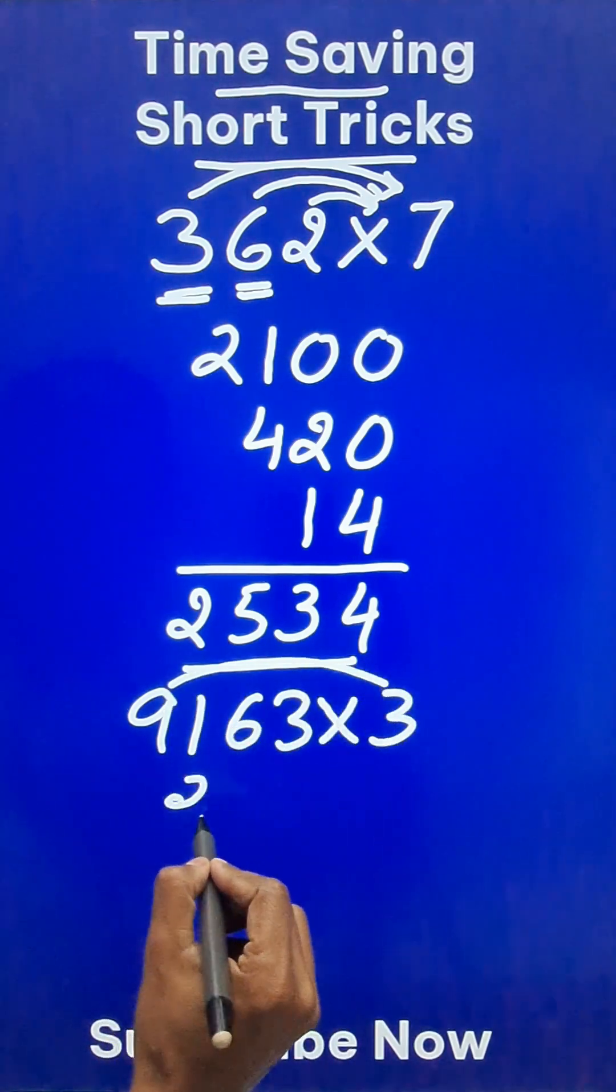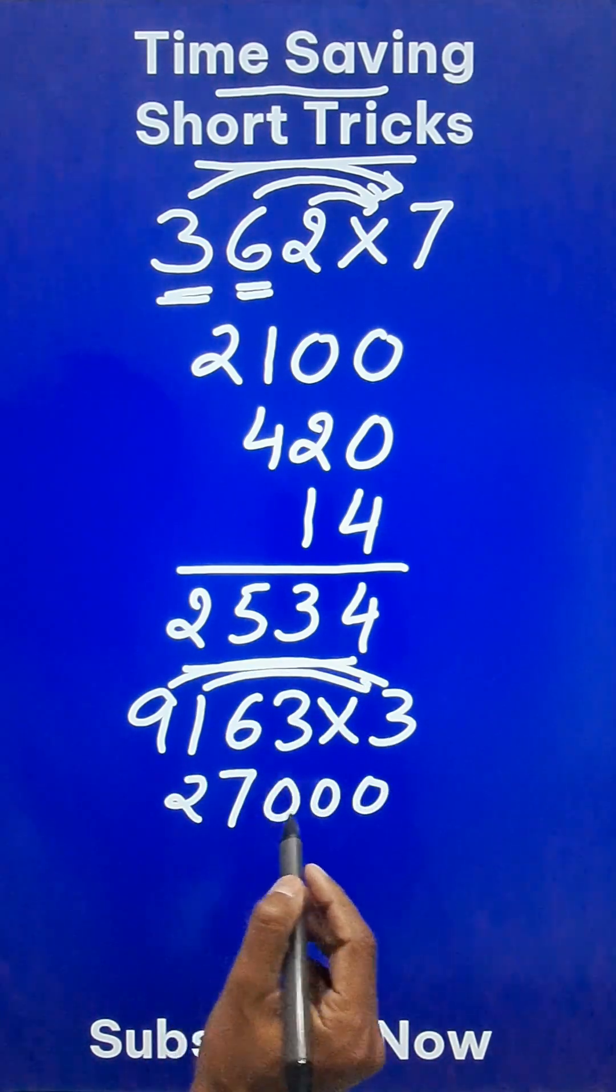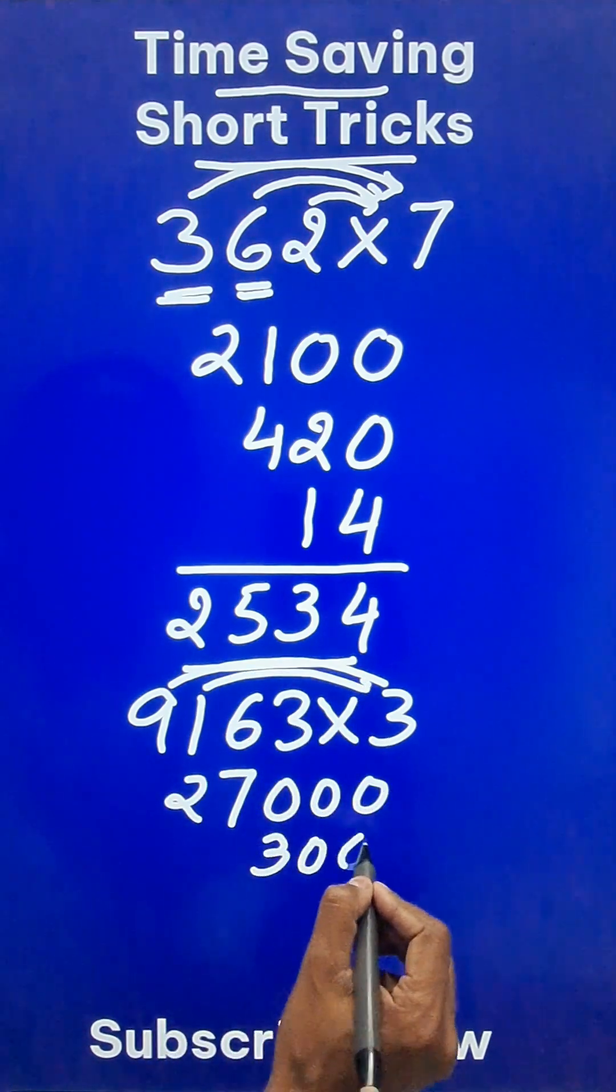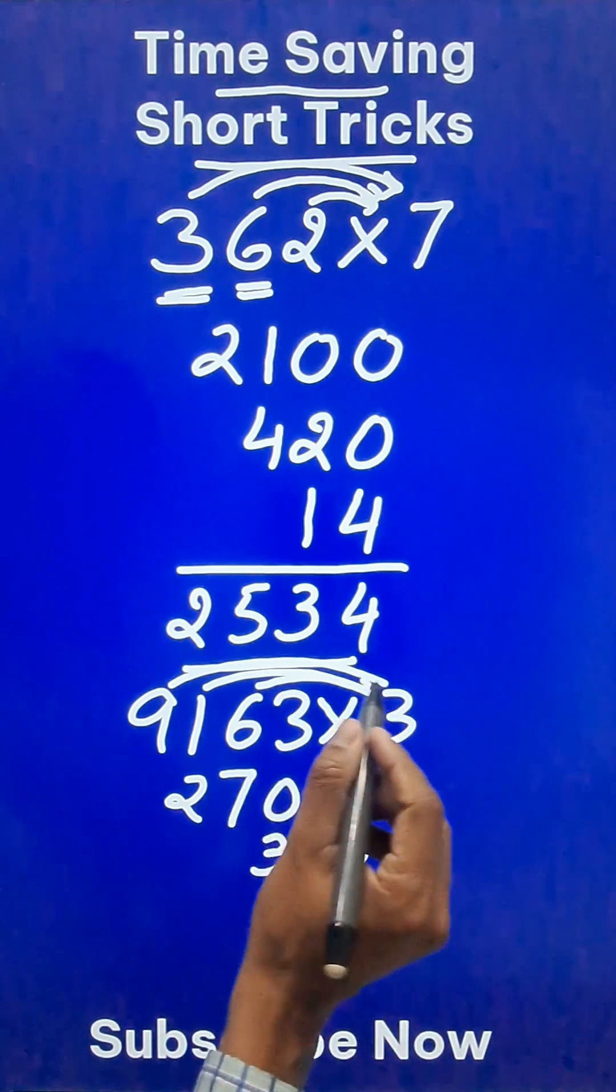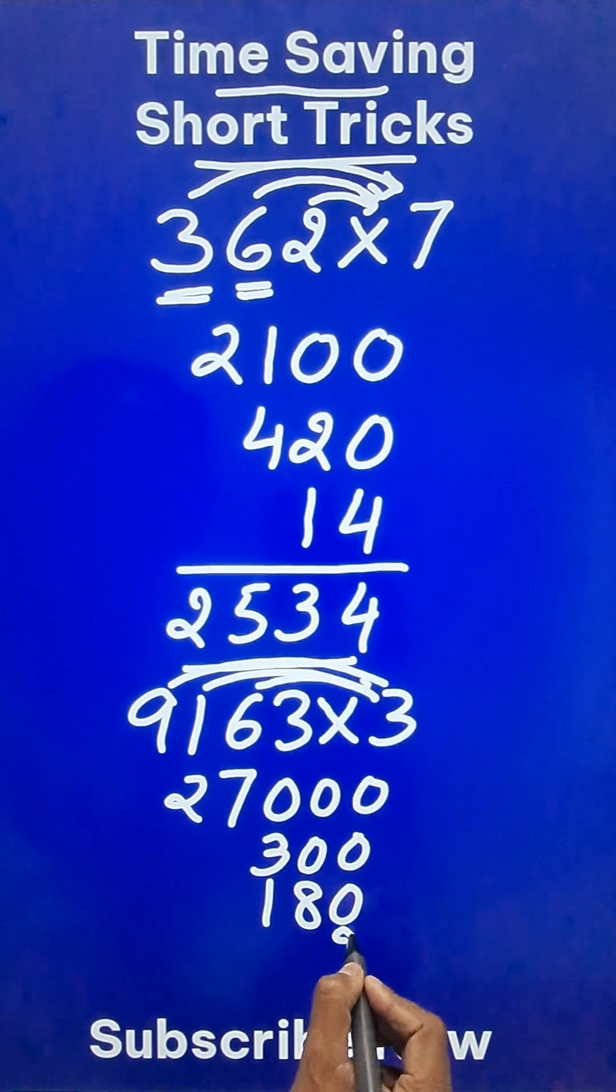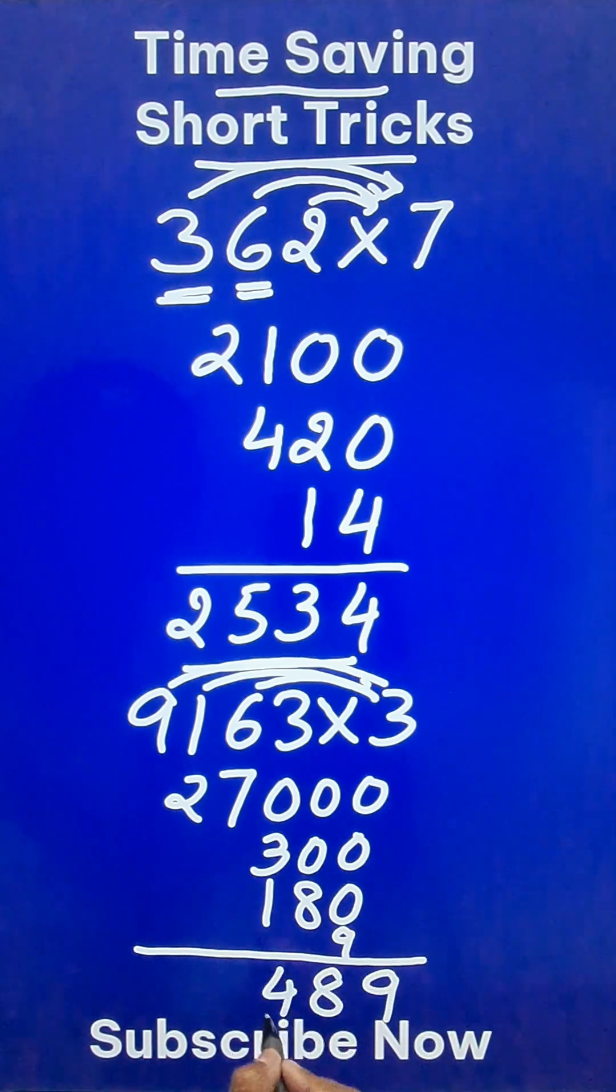9 threes are 27 followed by 3 zeros. 1 three is 3 followed by 2 zeros like this, and then 6 threes are 18 followed by 1 zero. And finally, 3 threes are 9, we can add it here. Now add vertically: 9, 8, 4, 7, 2, which gives us the final answer.